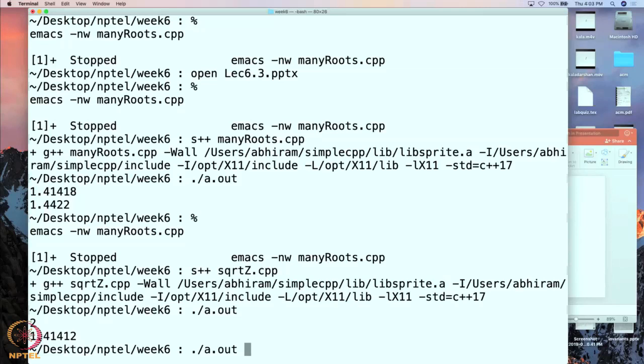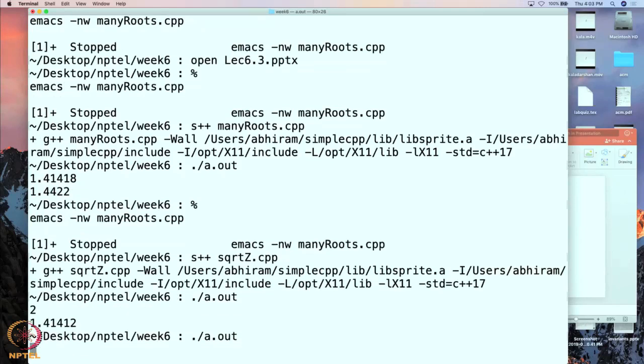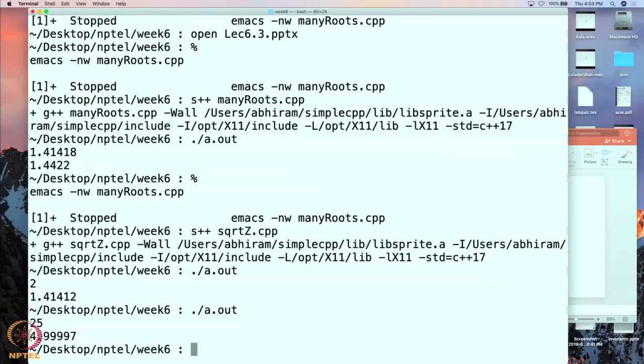So let us try one more. So maybe let us give it a value which is a perfect square. So it is printing out 4.9997. So again as I said this is going to print an approximate value and indeed this is a close enough value.